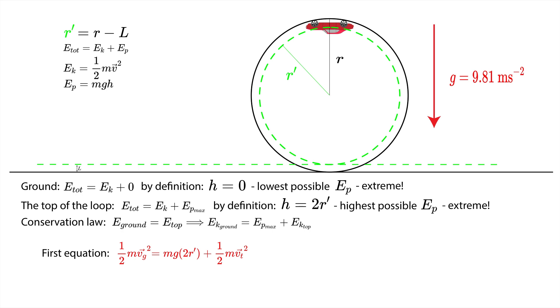From this we get our first equation for this problem, where we denoted vg as the velocity on the ground and vt as the velocity on the top of the loop. By some simple algebra we get a simplified version of this equation.